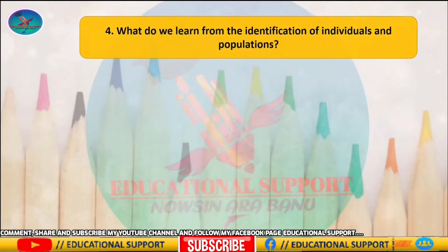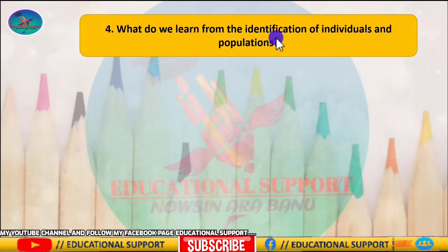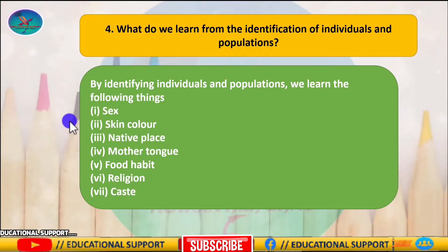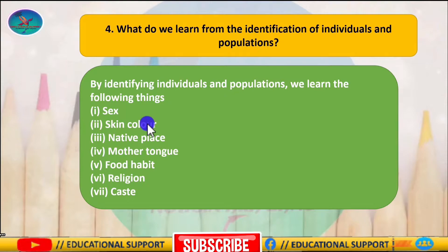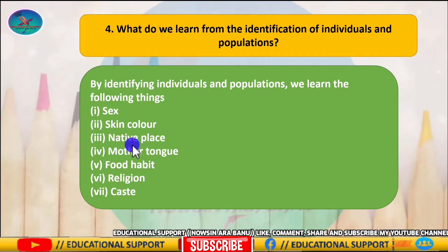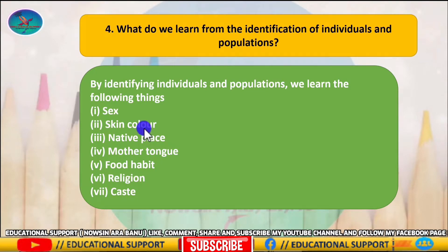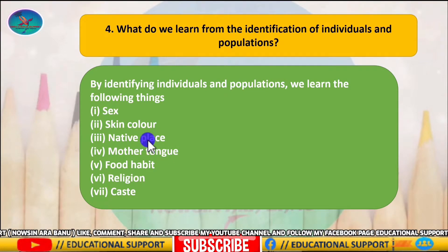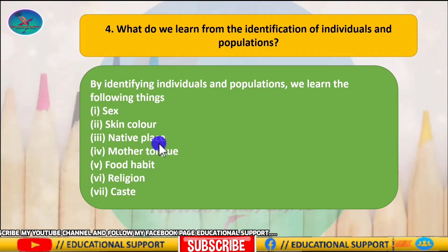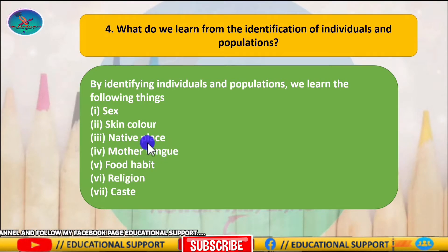Question number four: what do you learn from the identification of individuals and populations? The knowledge of characteristics of an individual or its whole population helps in identifying similarities and dissimilarities among individuals of the same kind or between different types of organisms. It helps us to classify organisms into various categories depending upon these similarities and dissimilarities.